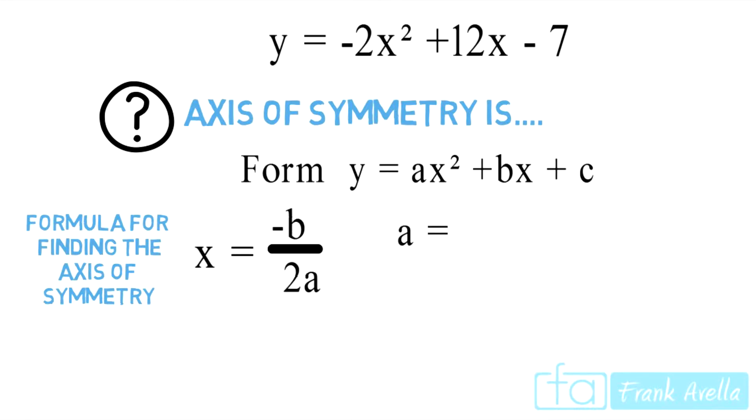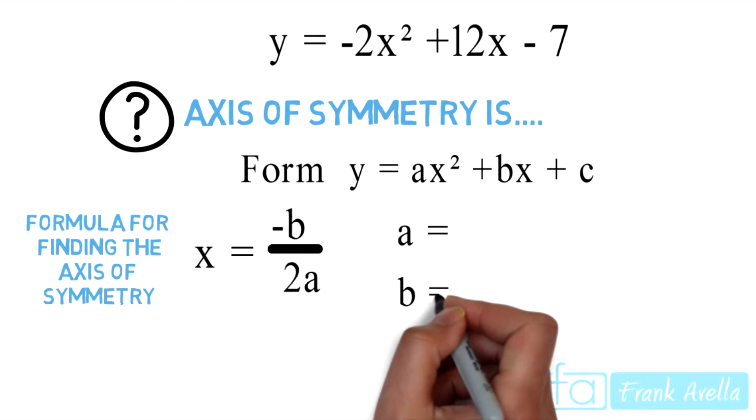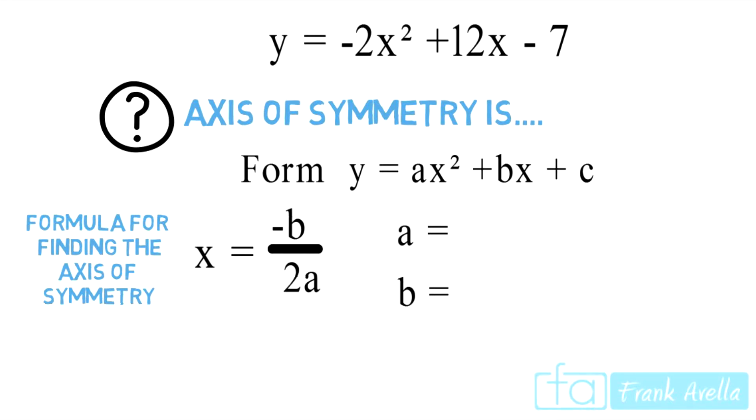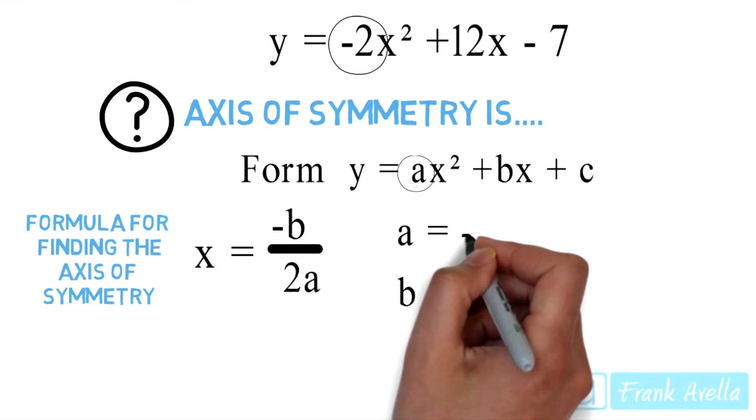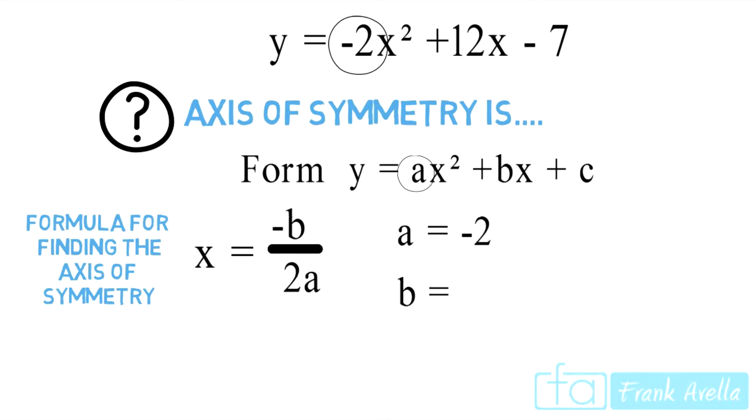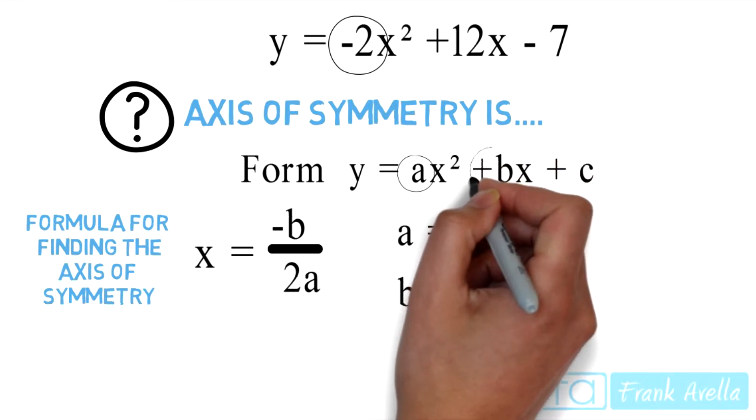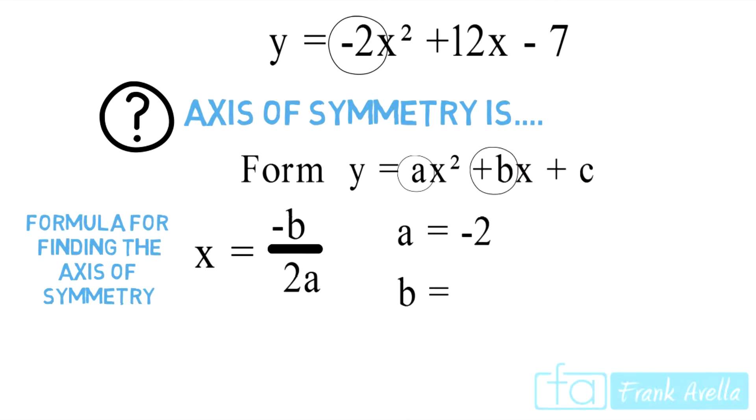With this formula, you want to find the value of a and the value of b. Now, a is the coefficient of the variable squared. So here the coefficient of the variable squared is negative 2, therefore a equals negative 2. And our b value, b is found in front of the variable raised to the first power. You have 12x and 12 will be our value for b.